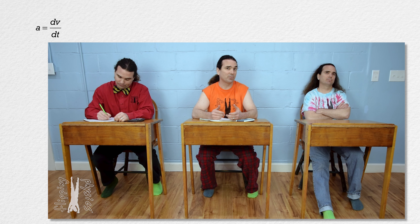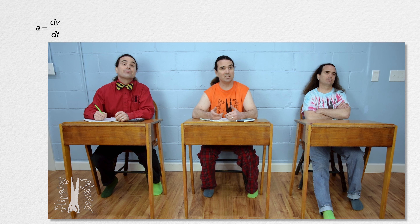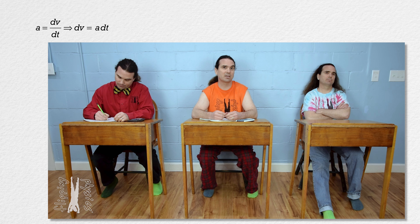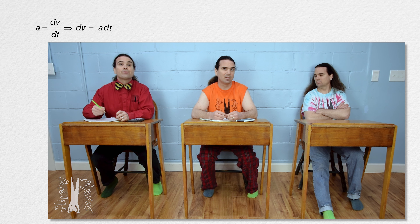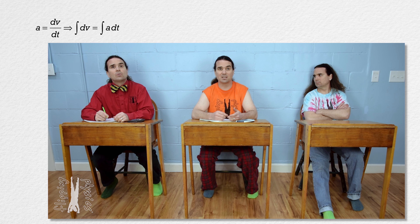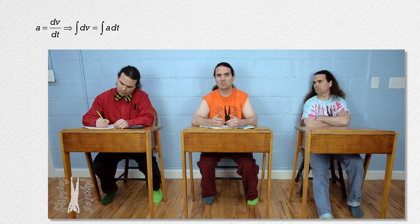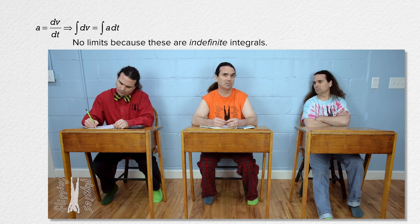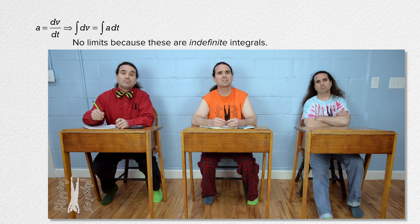Multiply both sides by dt and we get dv equals acceleration times dt. Take the integral of both sides, and we do not add the limits because we are doing an indefinite integral, and indefinite integrals do not have limits.